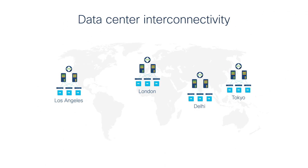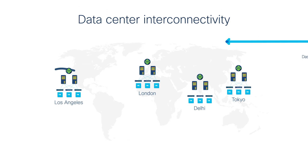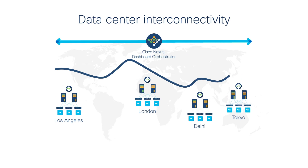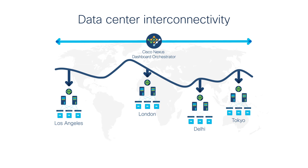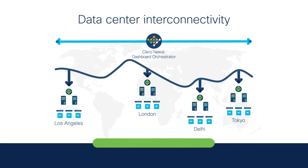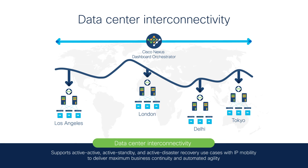If you're a service provider, e-commerce company, or financial services firm, you may have multiple data centers scattered across the globe, and you need to keep your business-critical apps available and responsive wherever they are. Cisco Nexus Dashboard Orchestrator lets you automate data center interconnectivity, so you can always maintain consistent policies between loosely coupled sites. It supports active-active, active-standby, and active disaster recovery use cases with IP mobility to deliver maximum business continuity and automated agility.